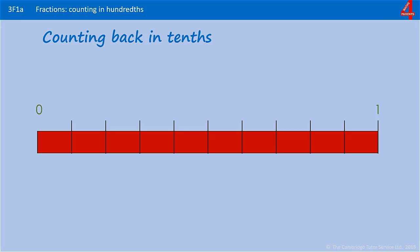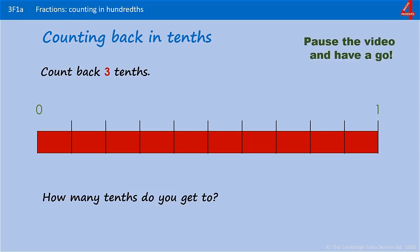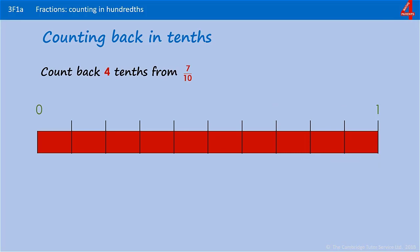Count back three tenths from one. How many tenths do you get to? Pause the video, have a go. From one, count back one tenth, which takes you to nine tenths. Count back another tenth, which takes you to eight tenths. Count back another tenth, that takes you to seven tenths. Count back three tenths from one, you have seven tenths.